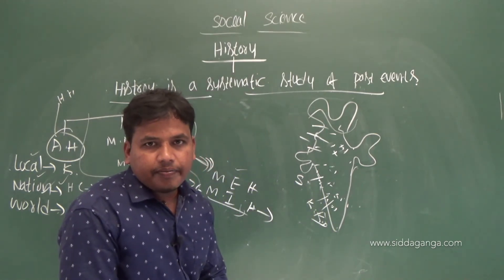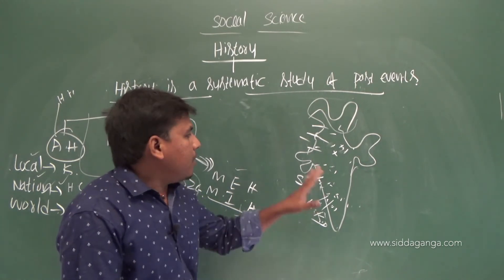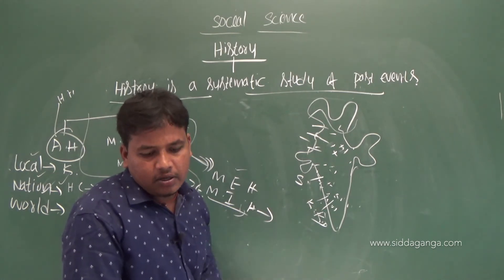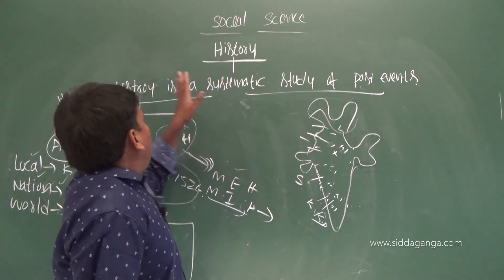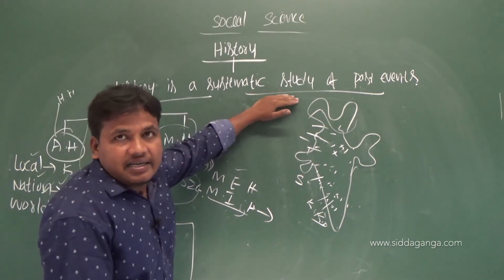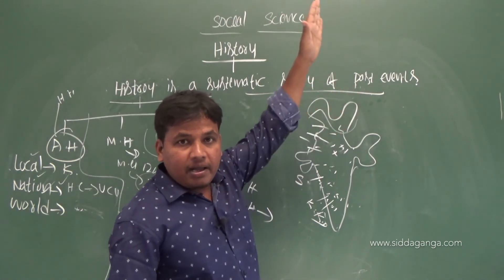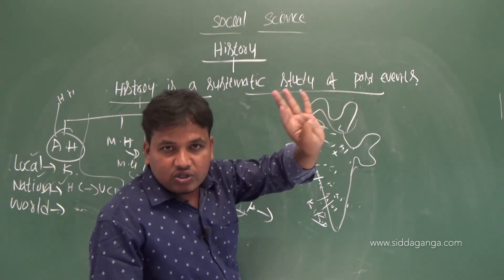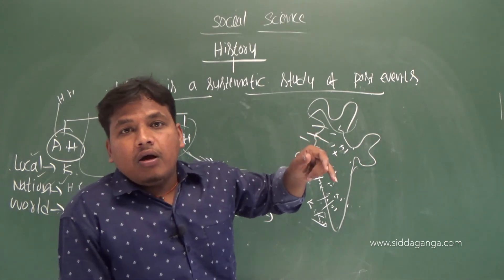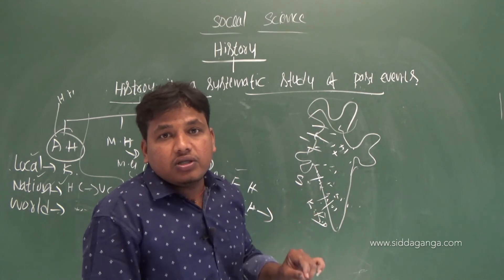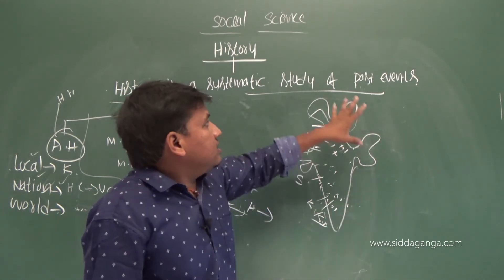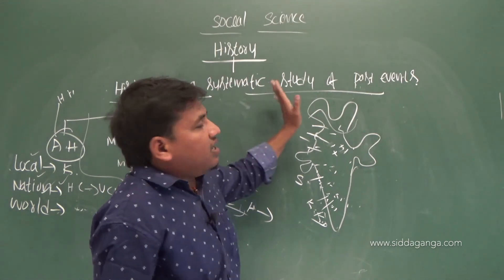Did you understand? What we have to study is modern Indian history as well as modern European history in 10th standard. History is a systematic study of past events. What are past events? The lifestyle of ancient people, their social system, economic system, political system, the kings who ruled, the battles that took place, and their contributions — art, architecture, inscriptions, and literature. These are all the things we study in history.